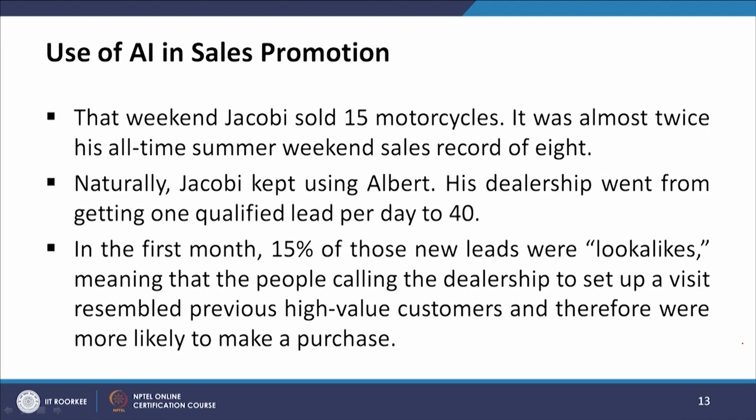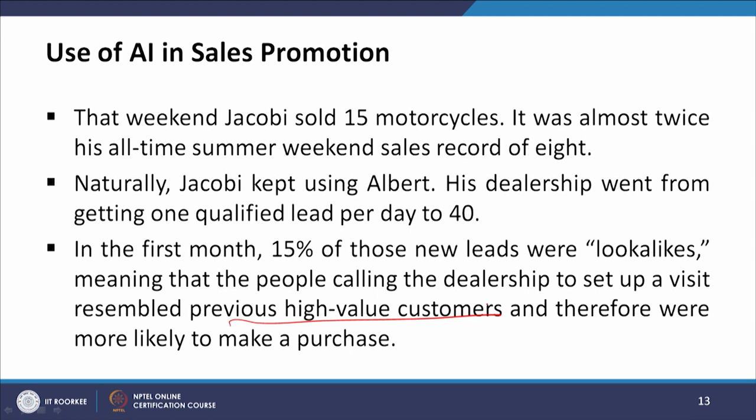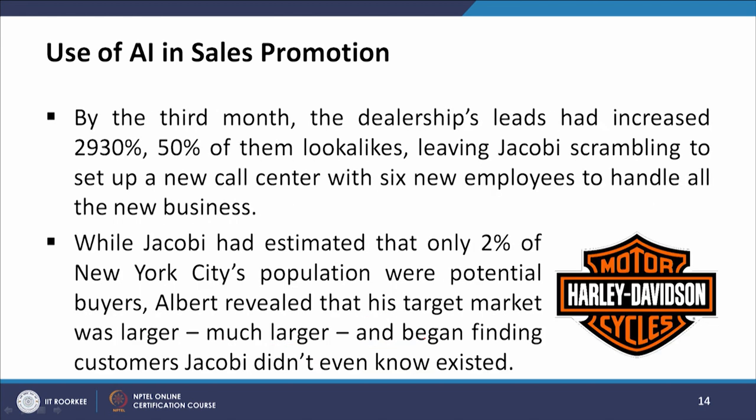Naturally, Jacobi kept using Albert. His dealership went from getting one qualified lead per day to 40. In the first month, 15 percent of these new leads were lookalikes, meaning the people calling the dealership resembled previous high-value customers and were therefore more likely to make a purchase. By the third month, dealership leads had increased by 1,930 percent, with 50 percent of them being lookalikes, leaving Jacobi scrambling to set up a new call center with six new employees to handle all the business.